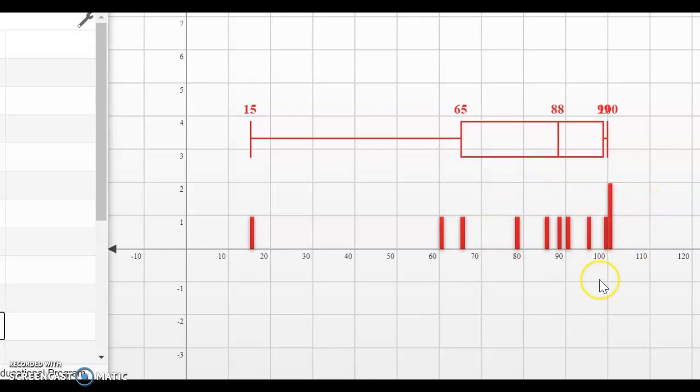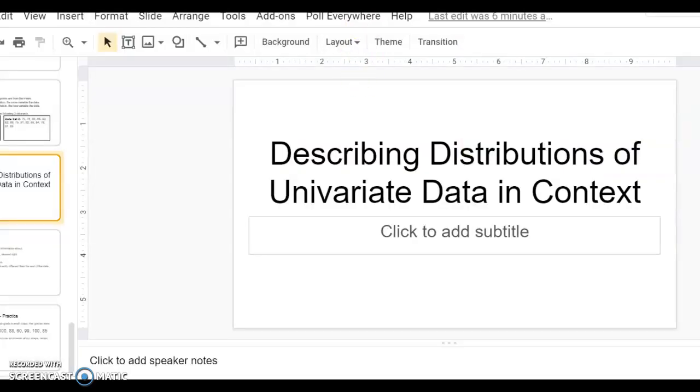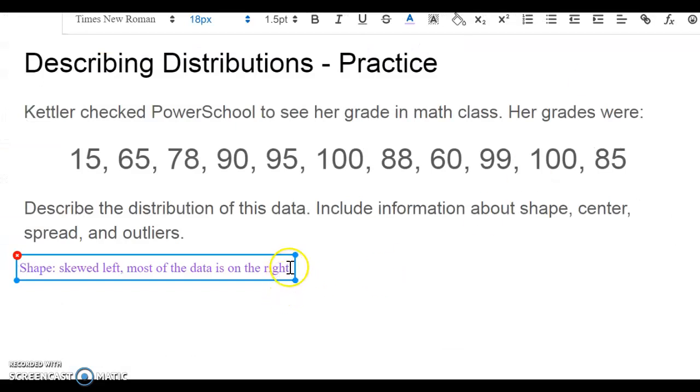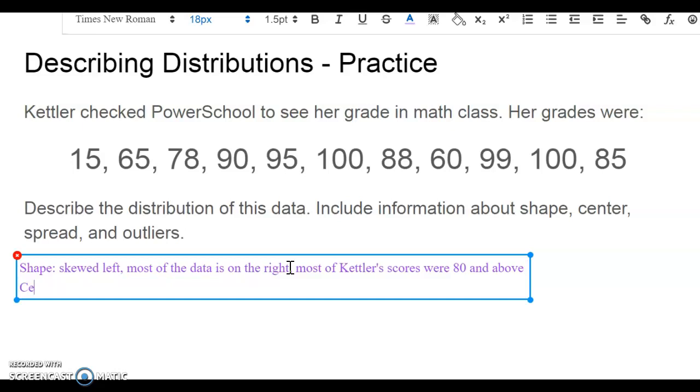So if we go back to that tab, we see that most of Kettler's scores look like they were 80 and higher. So most of Kettler's scores were 80 and above. When we think about the center of the data, the median is the best measure of center again because our data is skewed. So her median score is an 88. So that means her very middle score was a high B, 88 percent.